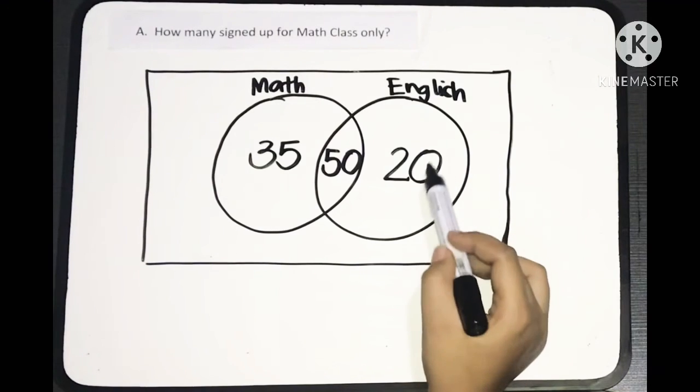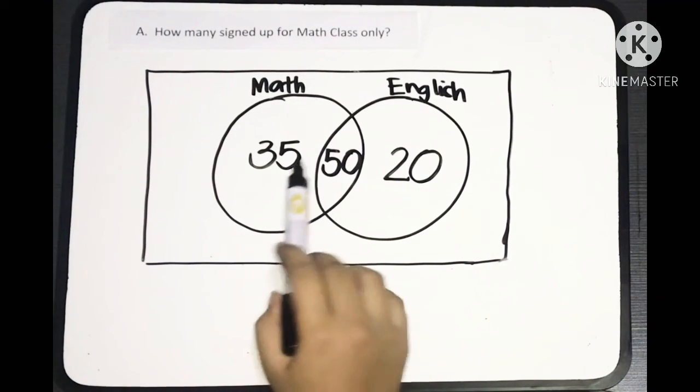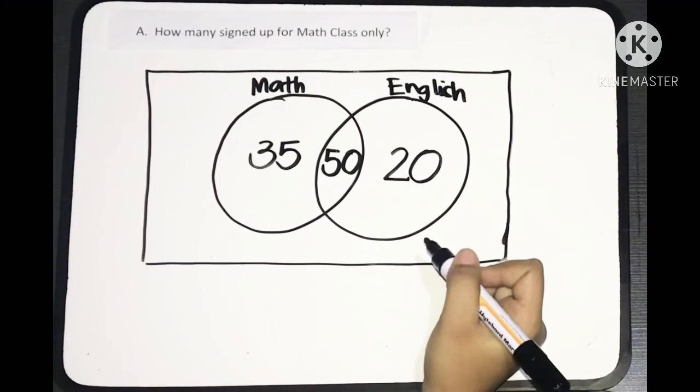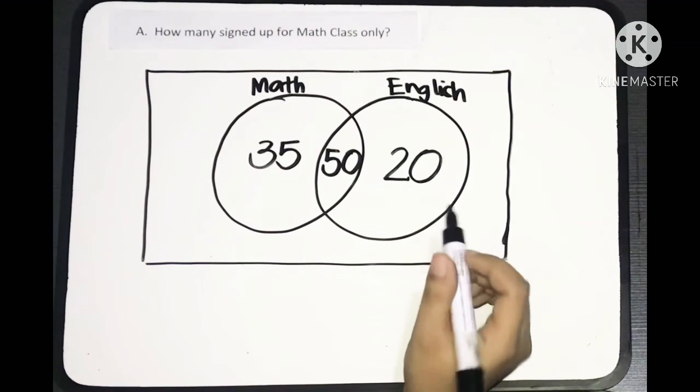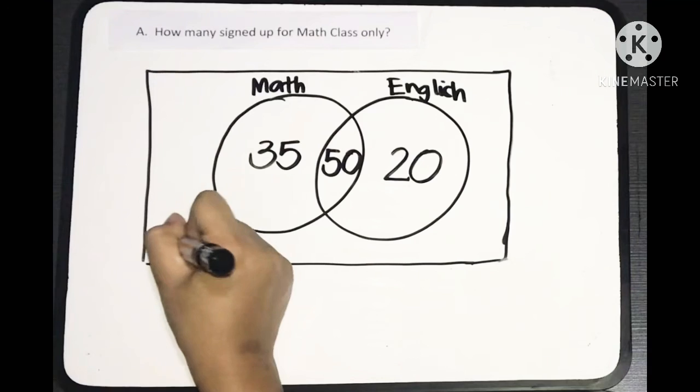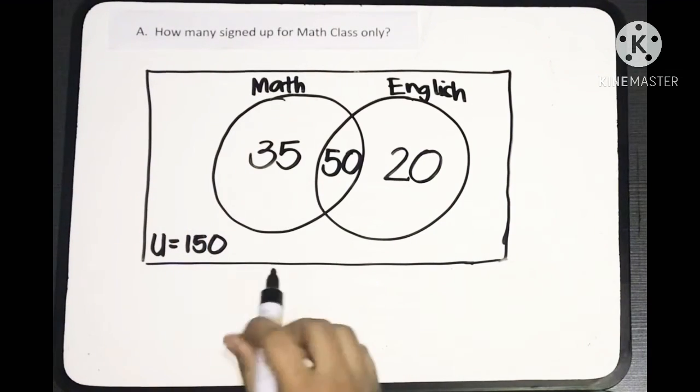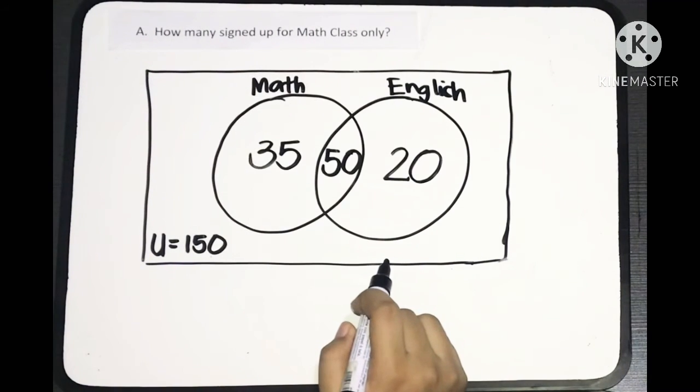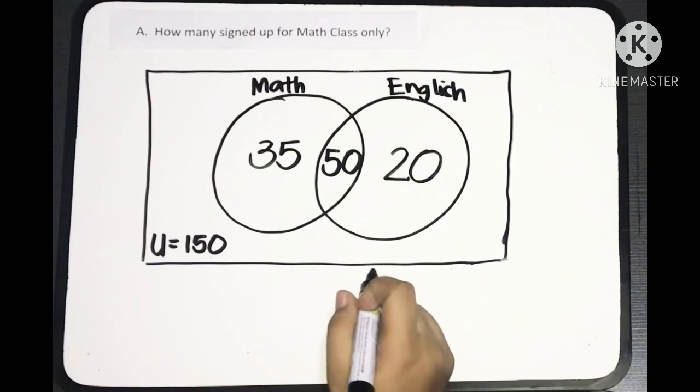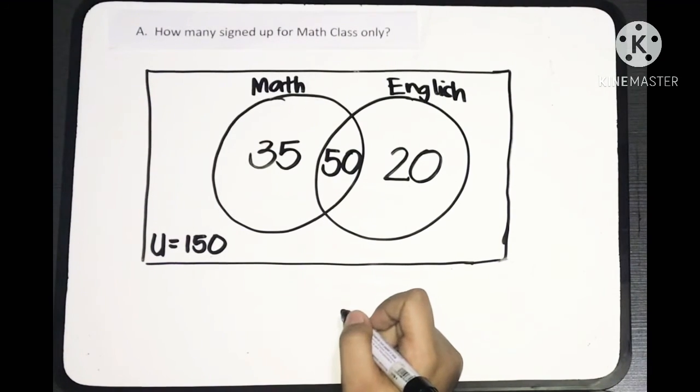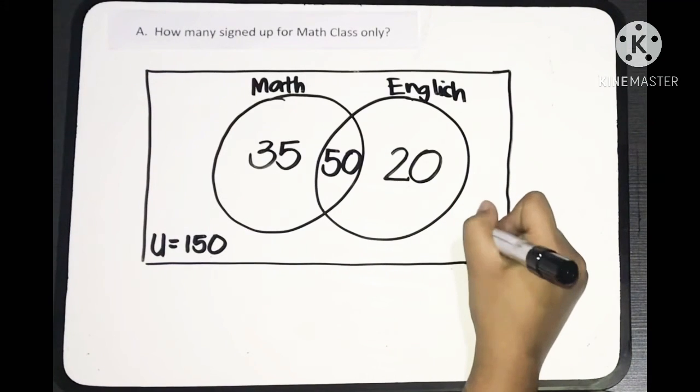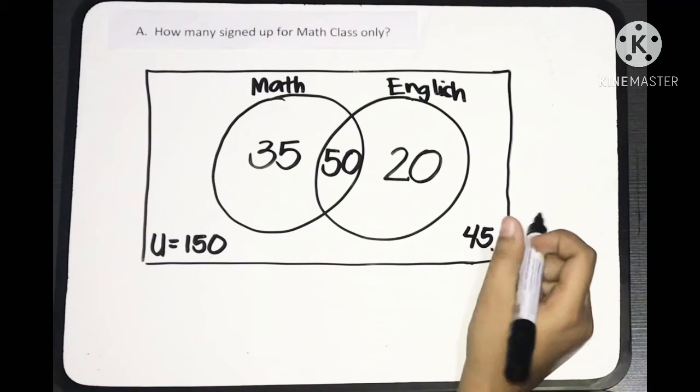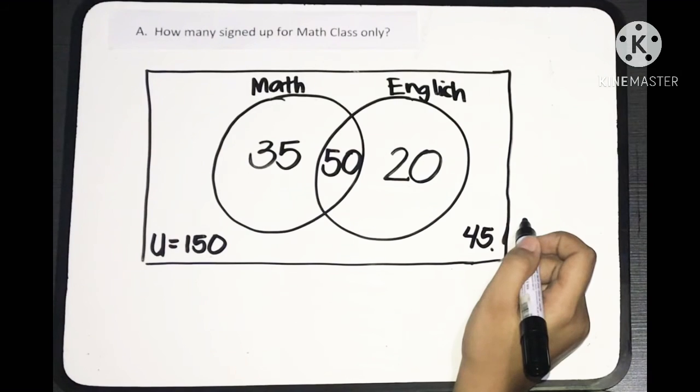So, getting the total of this will get 105. We have 35 plus 50 plus 20 equals 105. And back to the problem, there are 150 interviewed college freshmen. So, there's something missing. The total here is only 105, so let's subtract that. 150 minus 105 equals 45. So, we'll put 45 here to indicate that there are 45 students who did not register in either math or English class.